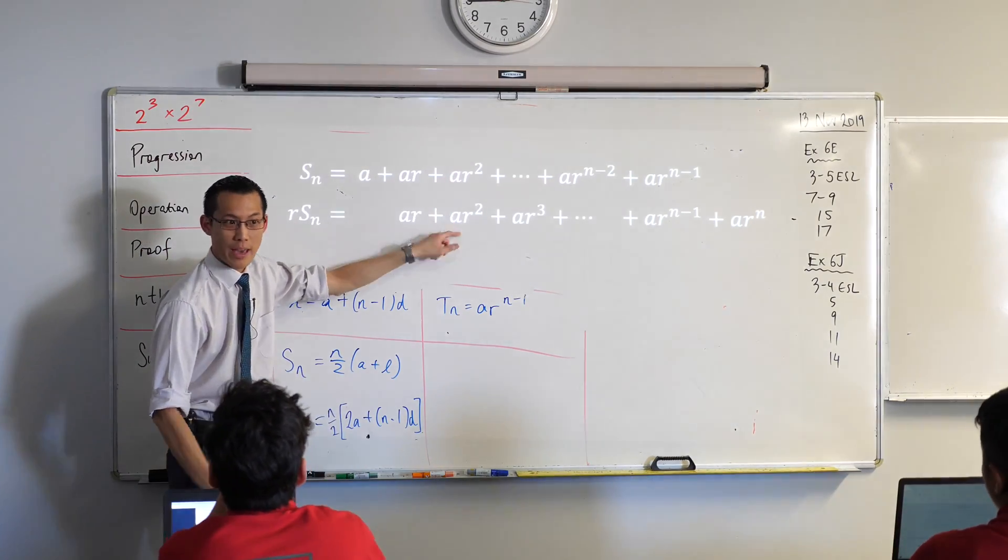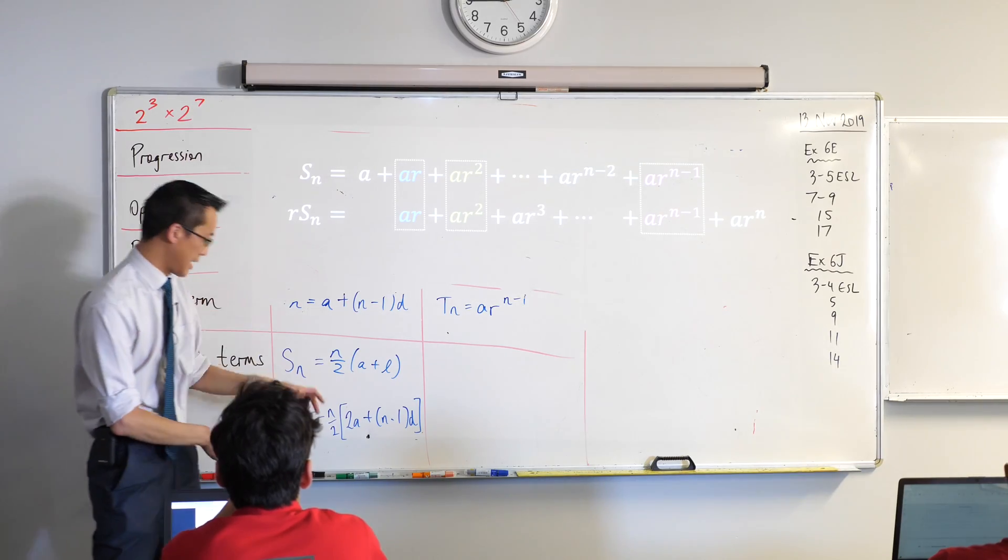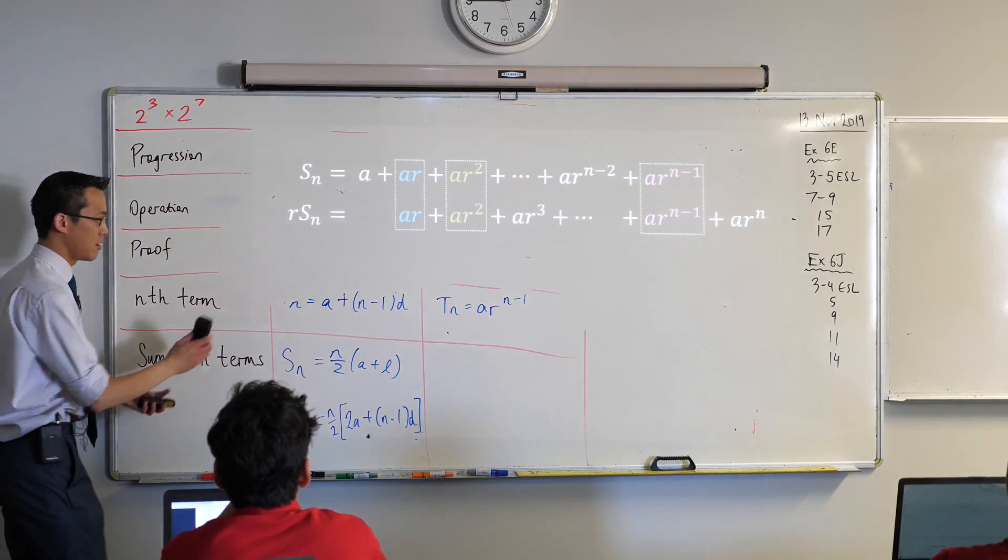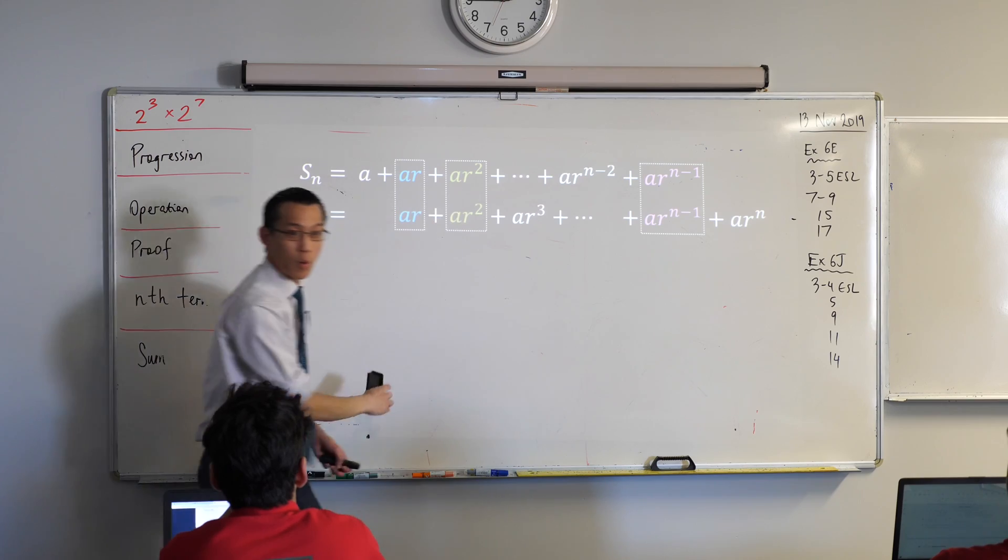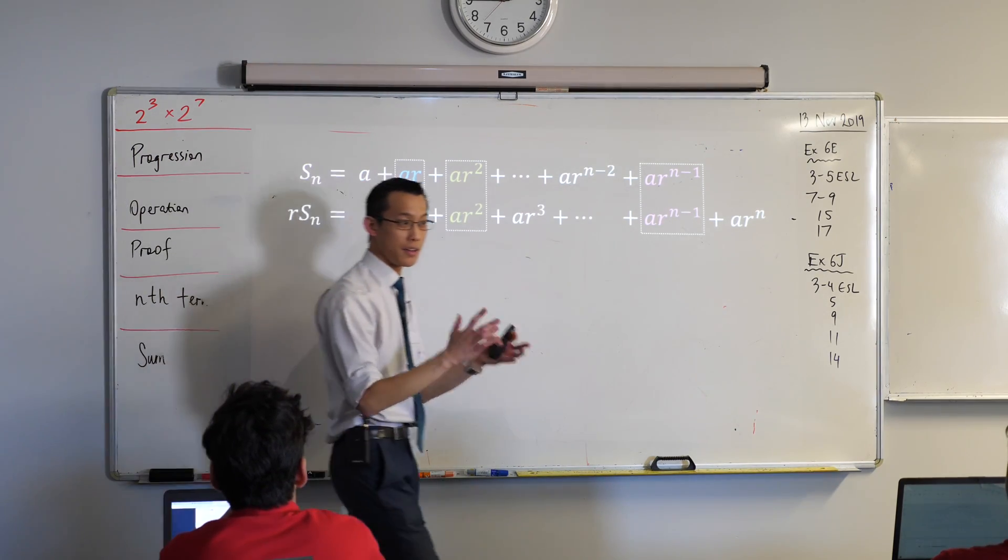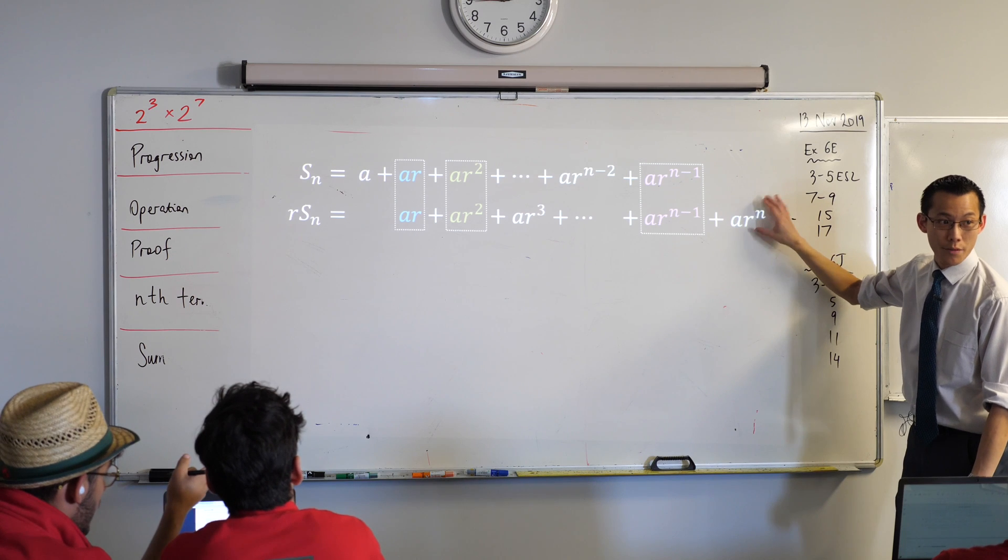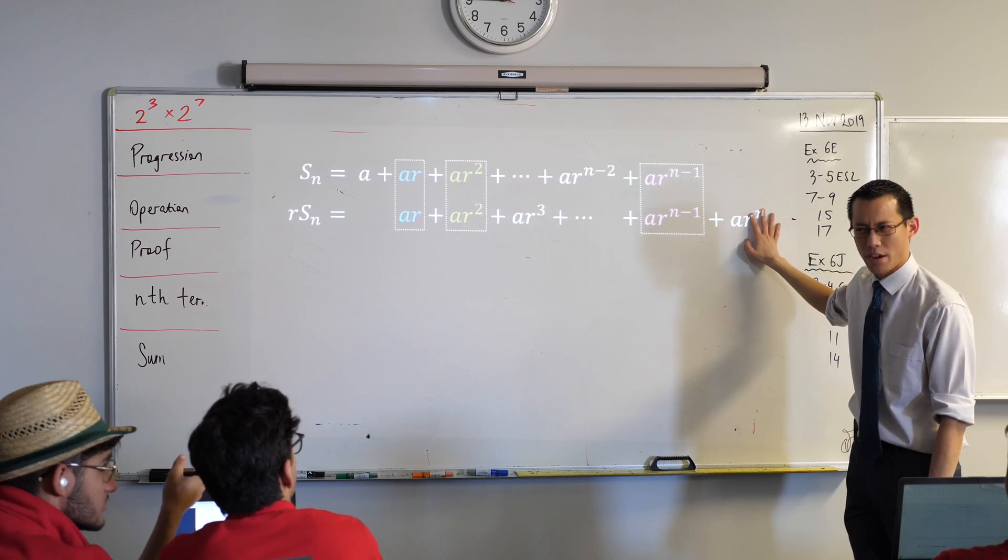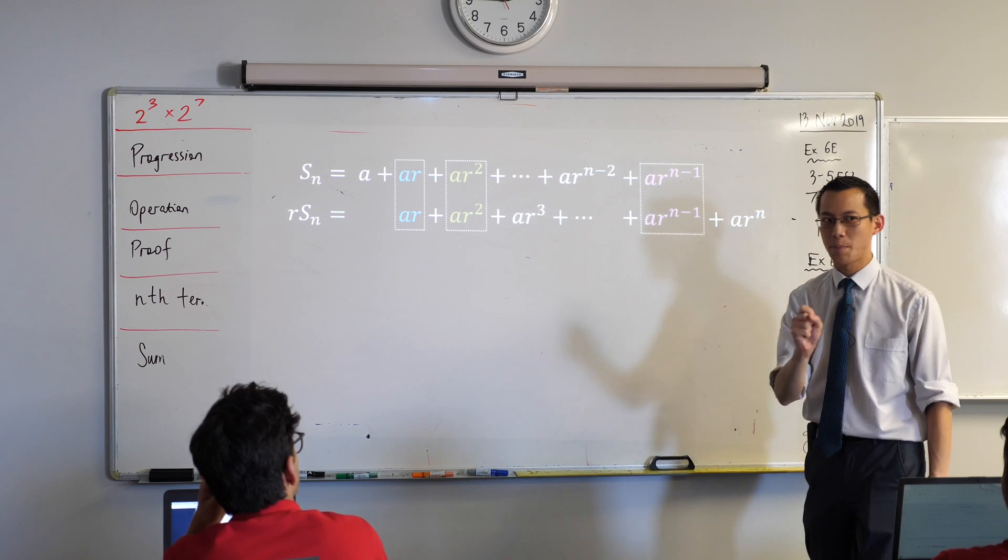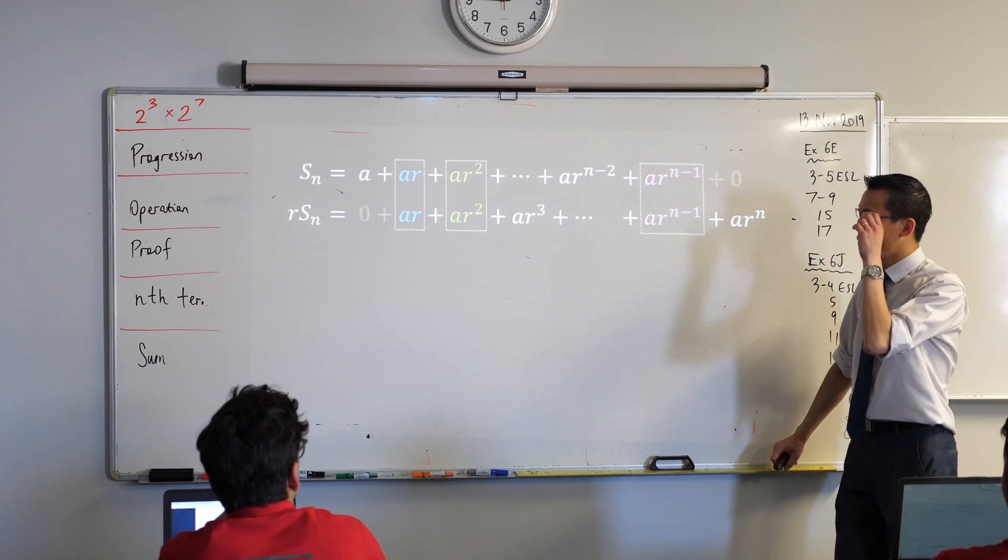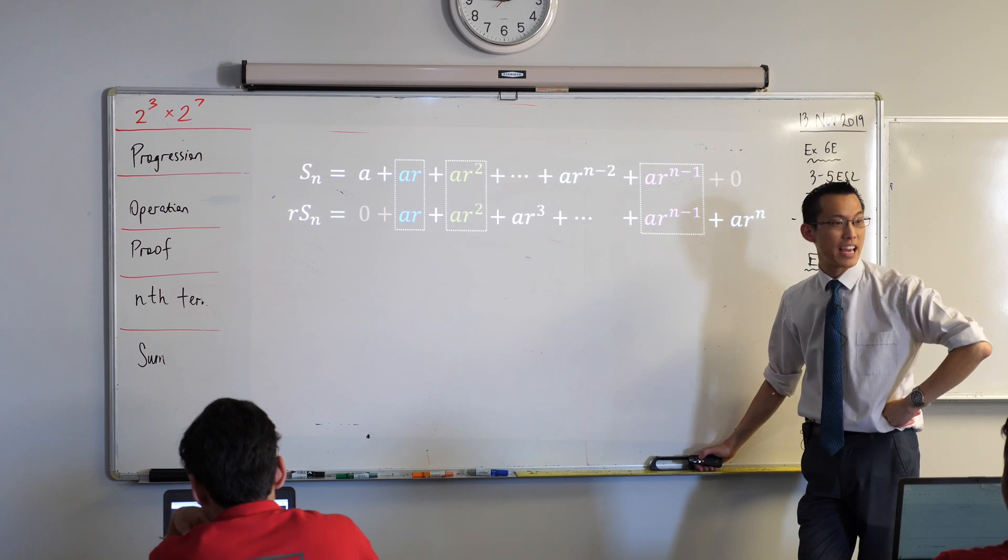What I've lined up is these identical terms from line 1 to line 2. The AR and the AR, AR squared and AR squared and so on. You can see all of these guys that are identical. What I want to do is take advantage of the fact that because I have so many things that are identical I can get rid of all of those identical terms if I take one line and subtract the entire next line. I'm going to take this whole line and subtract every term from this line. This is a bit like simultaneous equations, solving by elimination.